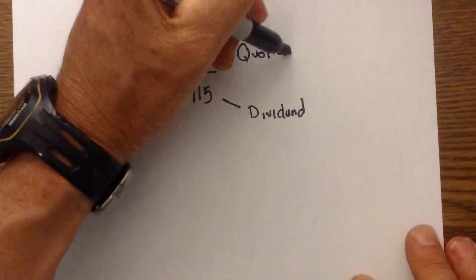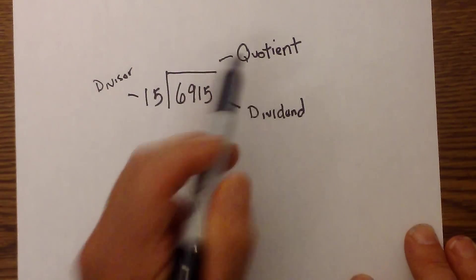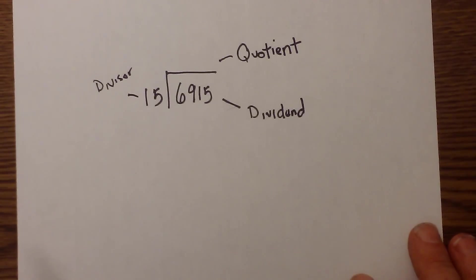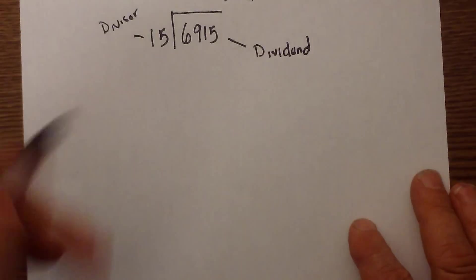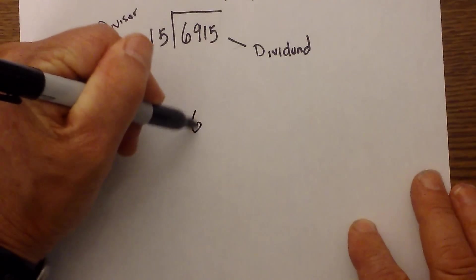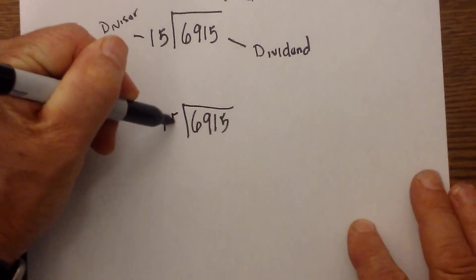You may have heard these terms: the divisor, dividend, and the quotient. Let me rewrite this so it is not as messy. I have 6,915 divided by 15.